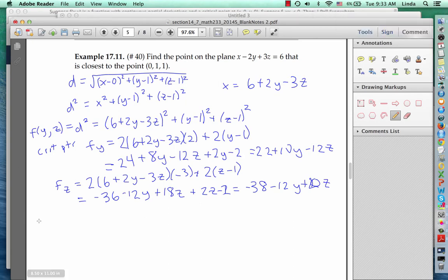Now we need to set f sub y and f sub z to be 0. So 0 equals 22 plus 10y minus 12z, and 0 equals minus 38 plus 12y plus 20z. Solving these system of linear equations is kind of a pain, but after you carry it out, you get that y equals 2 sevenths, z equals 29 fourteenths.